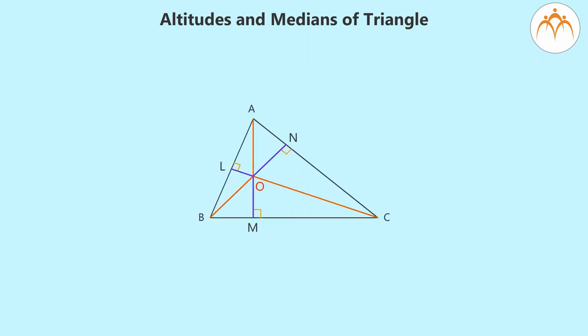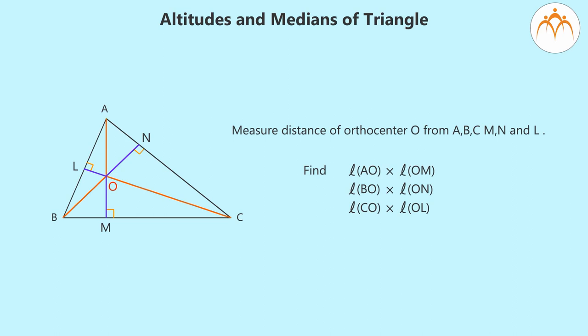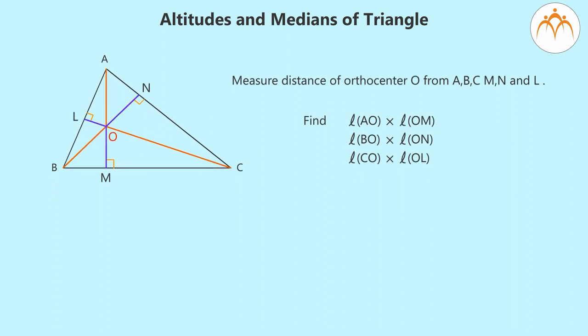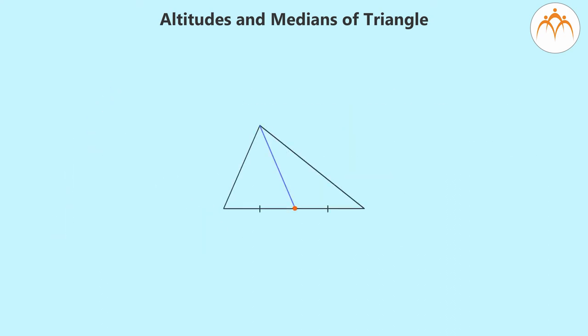Measure distance of orthocentre O from A, B, C, M, N, and L. Find length AO, length OM, length OB, length ON, length CO, length OL. What do you see?